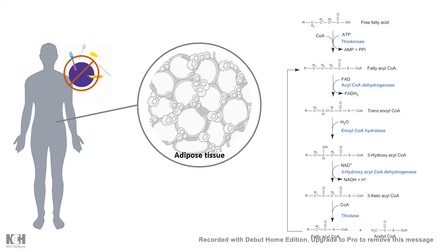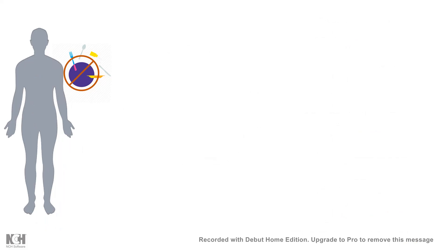The body then turns to adipose tissue-derived fatty acids. Fatty acid oxidation takes place after all these reserves are gone, and the key intermediate produced is acetyl-CoA, which can be channeled into various metabolic processes to generate energy and ATP.